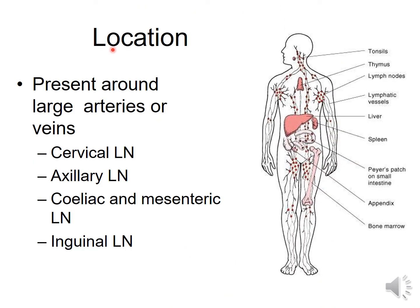Regarding the location of lymph nodes: they are present around large arteries and veins. The major lymph nodes are the cervical lymph nodes, axillary lymph nodes, celiac lymph nodes, mesenteric lymph nodes, and inguinal lymph nodes.